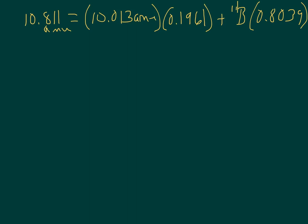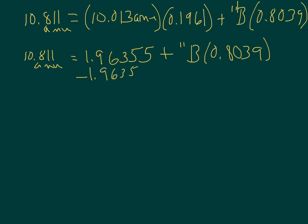Let's get out the calculator. 10.811 amu, and let's multiply 10.013 times 0.1961, and I get 1.9635. Let's go ahead and put in one more decimal place, so 1.96355, plus the B-11 isotope times 0.8039. So let's go ahead and subtract this off from both sides.